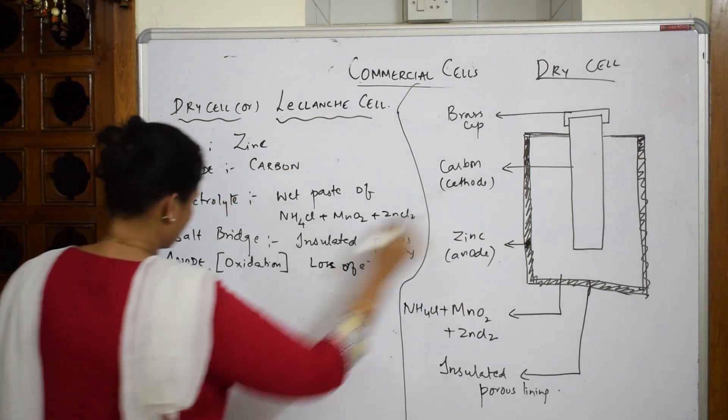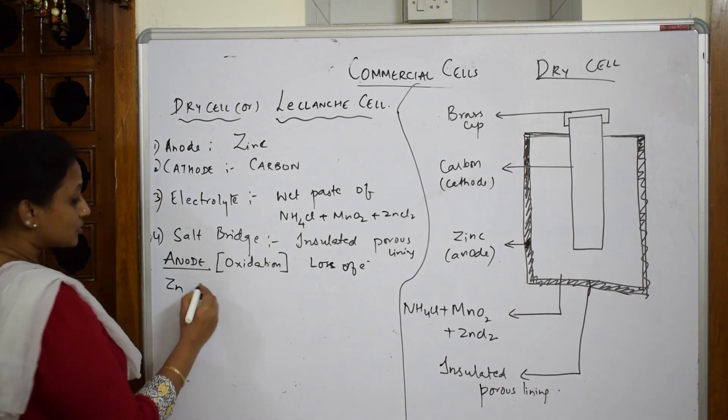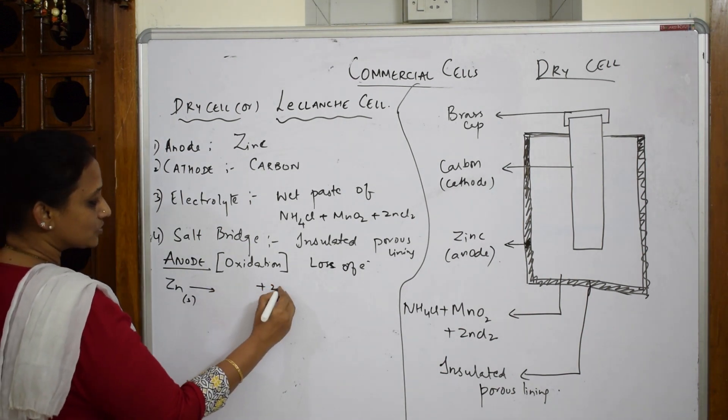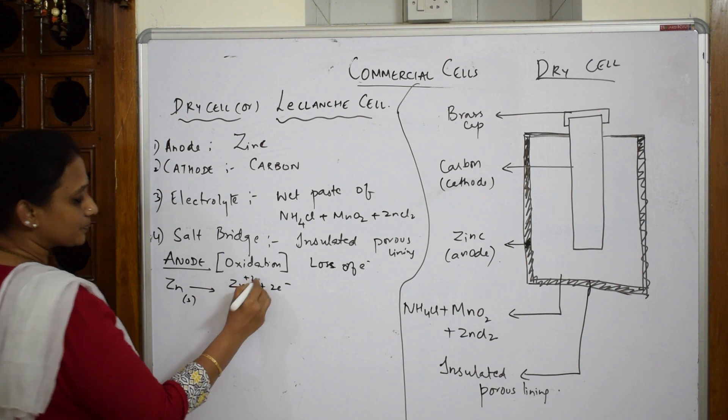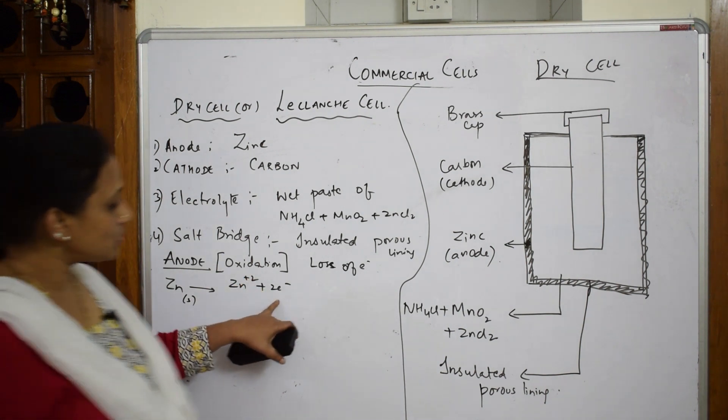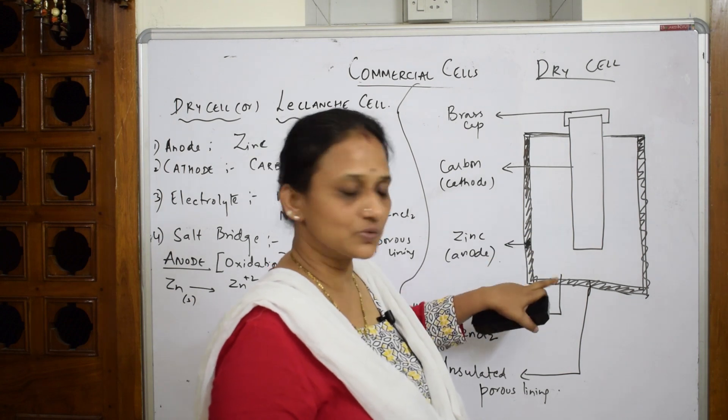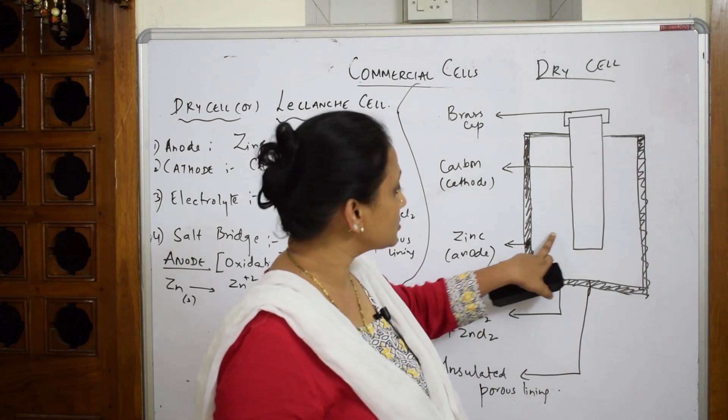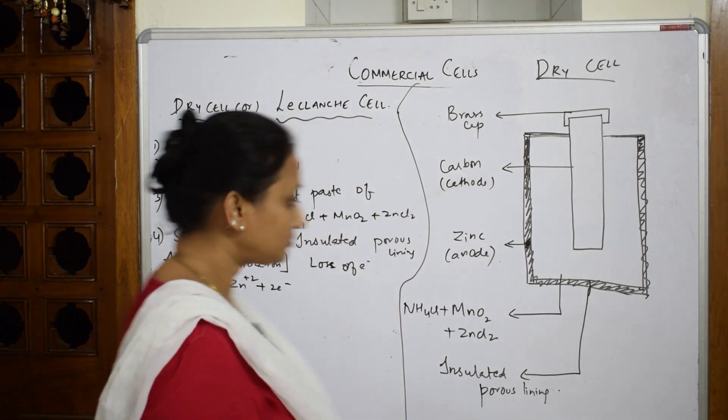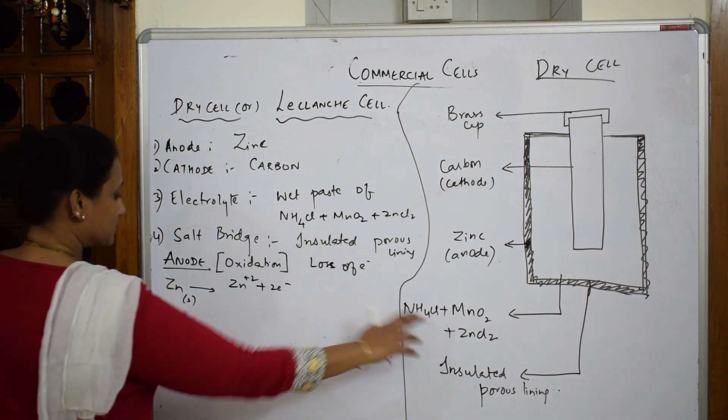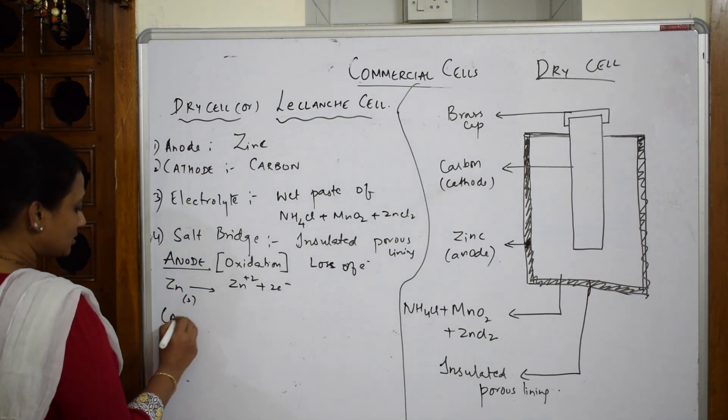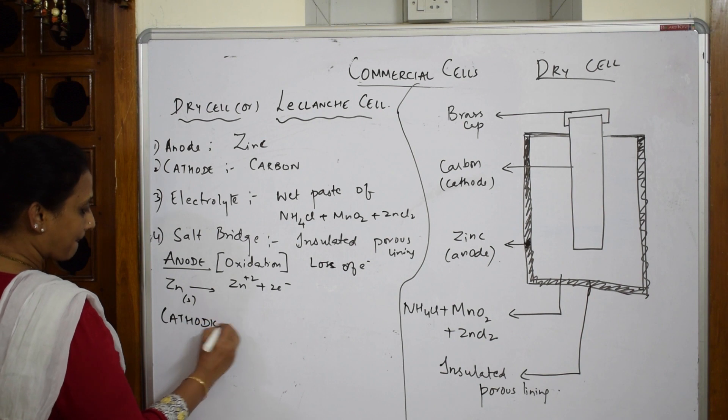First, what is there? The anode you have is zinc. We very well know oxidation means loss of electrons. Start: pick up zinc which is a solid. It's going to give us two electrons and forms Zn²⁺. These two electrons from here through the salt bridge are going to get transferred to the electrolytic paste.